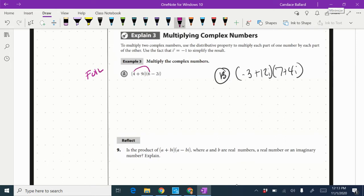So we've got 4 times 6 would be 24. Then my outsides, 4 times negative 2i would be negative 8i. And then we have 9i times 6, which would be 54i. And then 9i times negative 2i would be negative 18i squared.